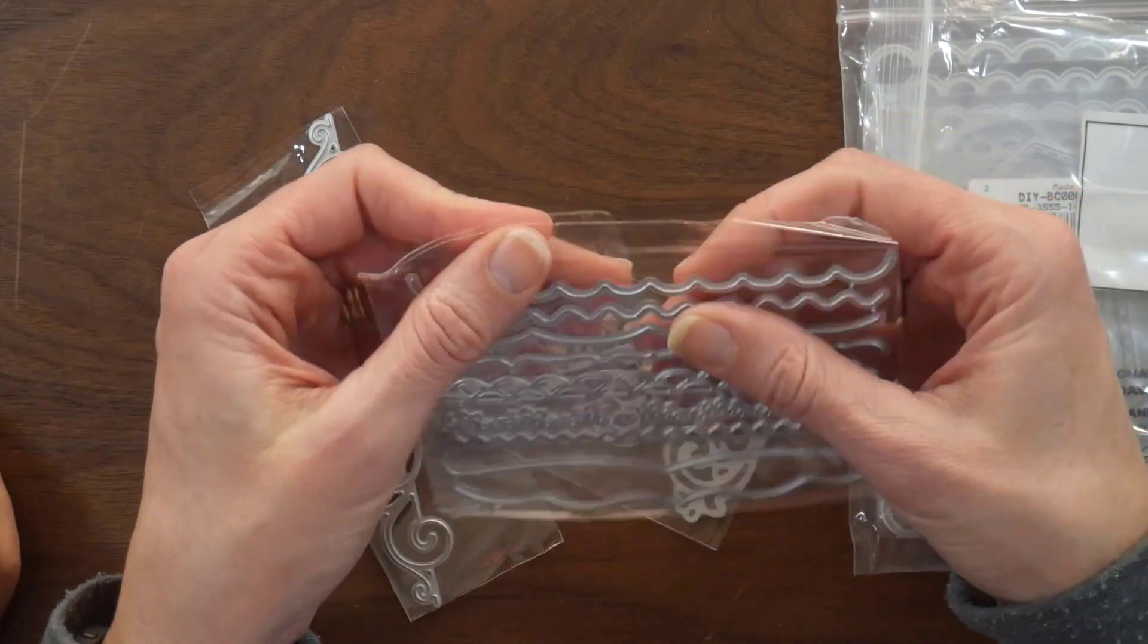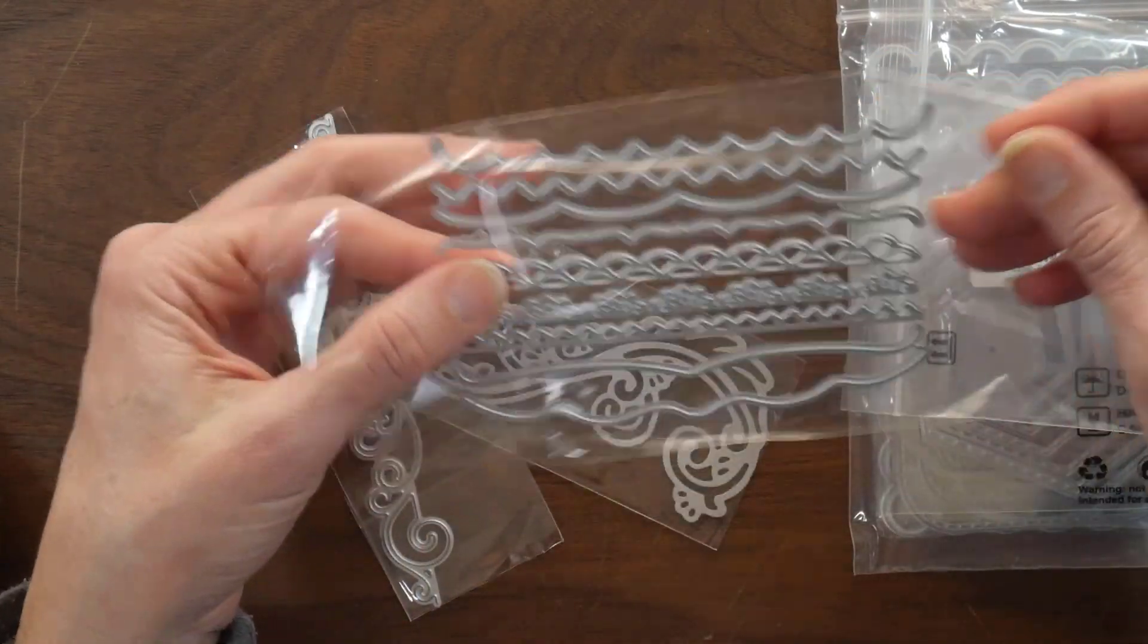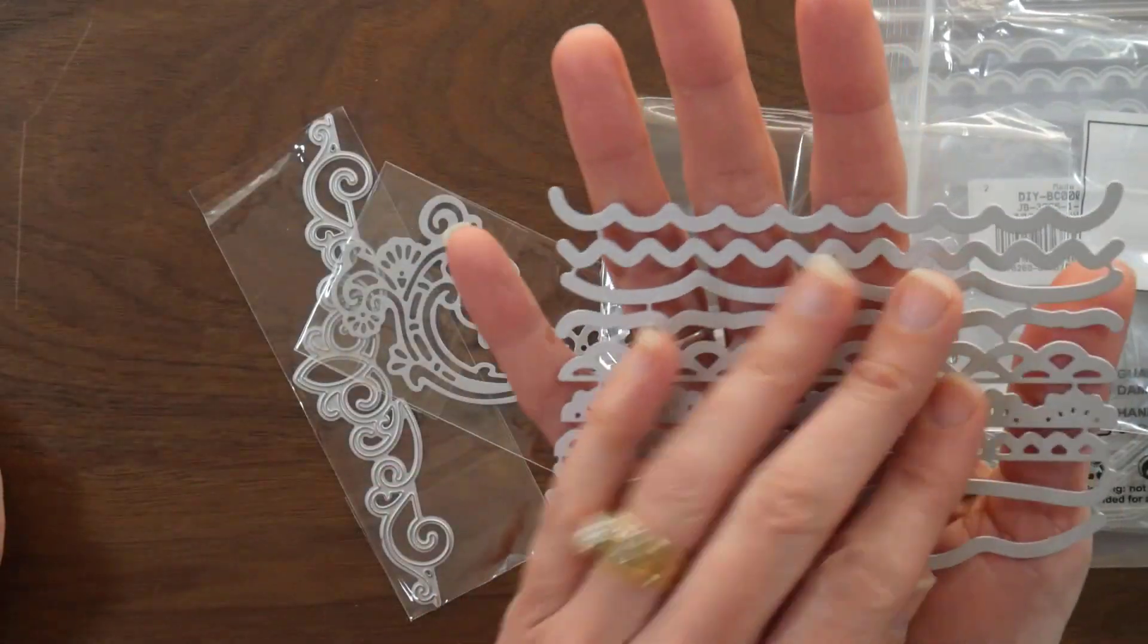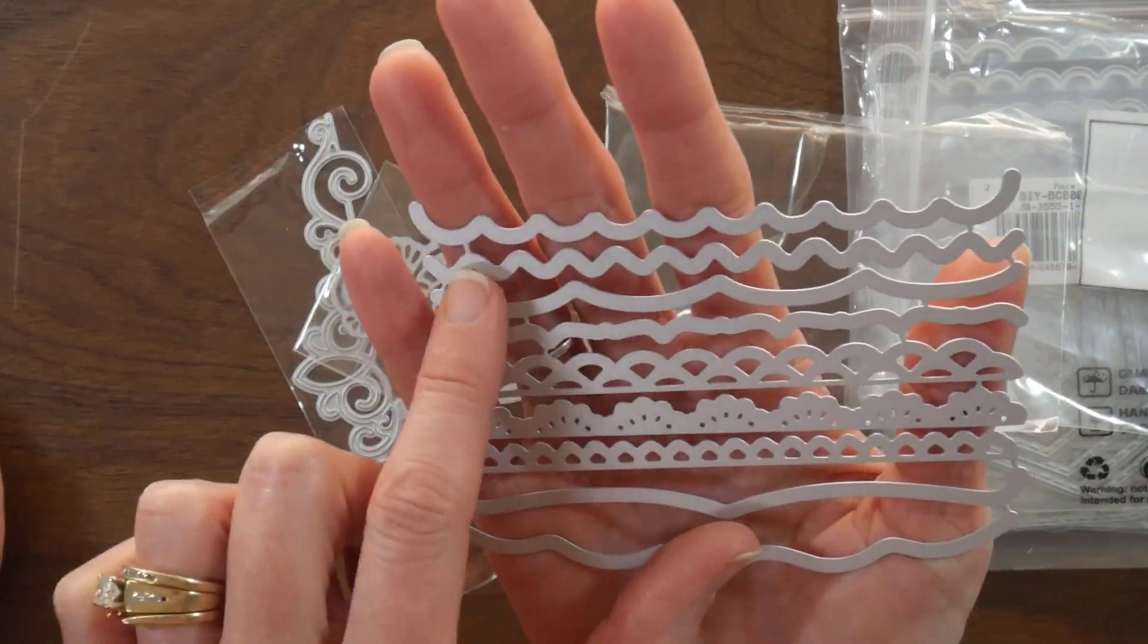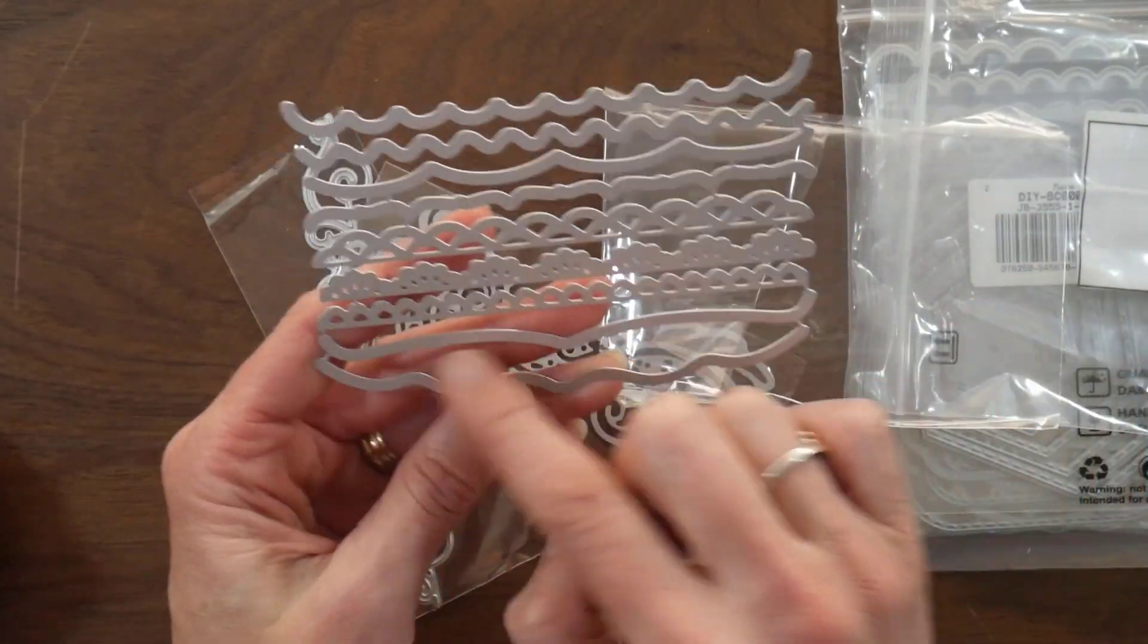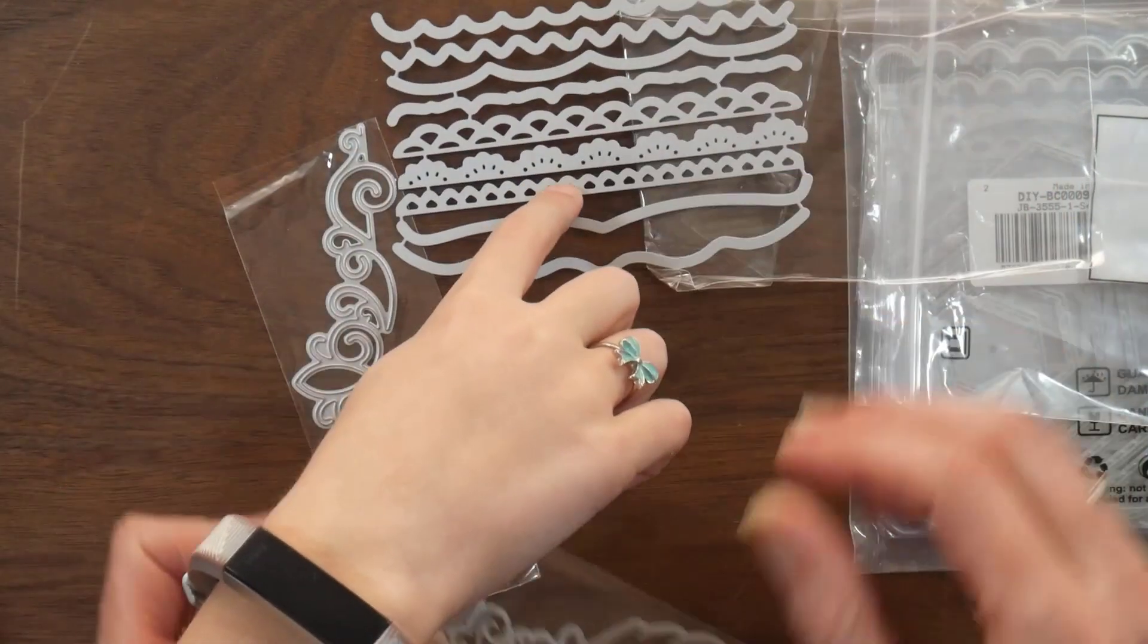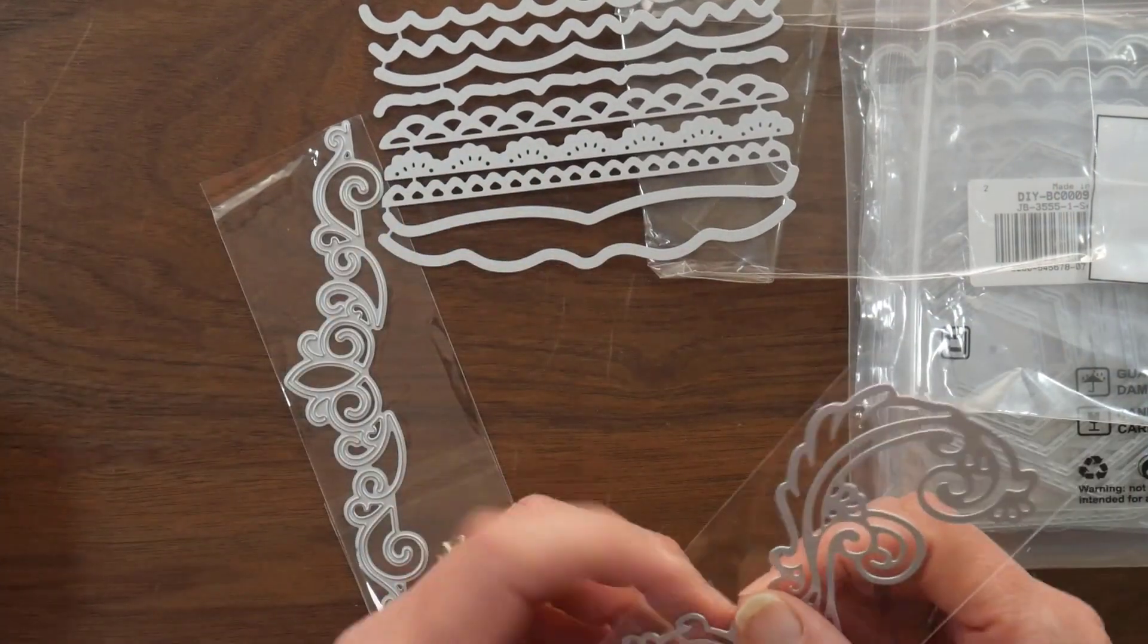So this first set is a border set. It's just got different types of border edges here, like the scalloped, a little wave, there's like a doily, and the crown. Yeah, Ellie says it looks like a crown.